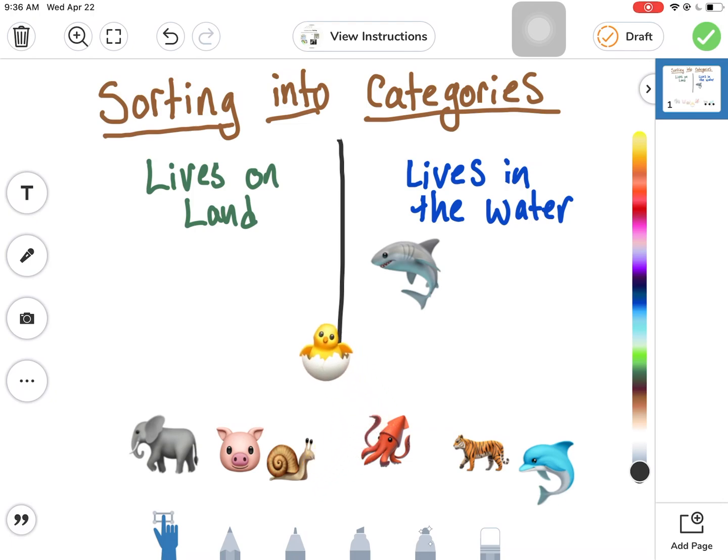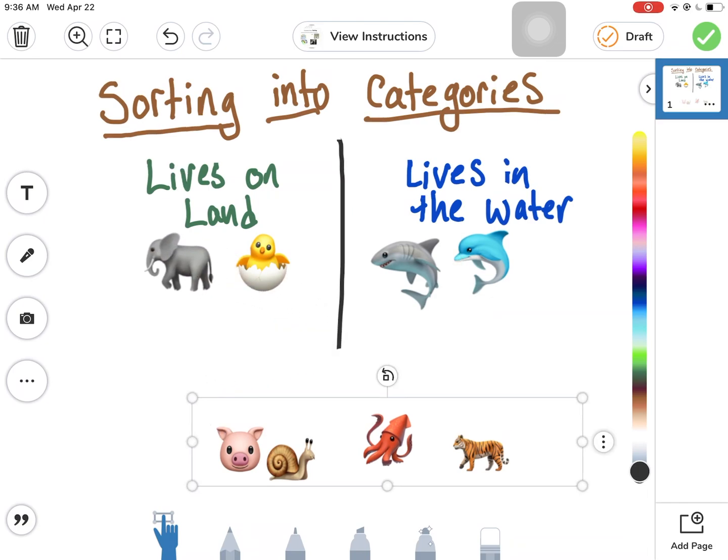We're just going to do the same thing with the different animals. We've got our chick - chicks live on land. How about our dolphin? Dolphins live in the water. How about an elephant? They live on land.